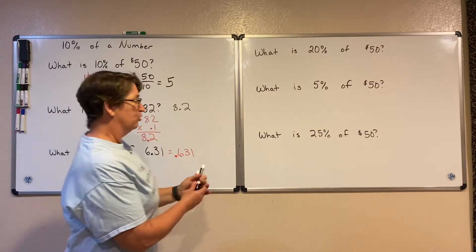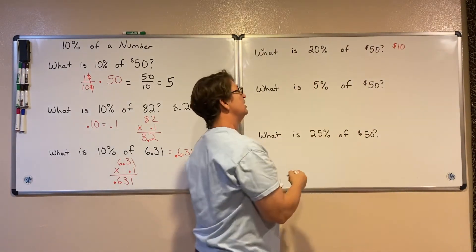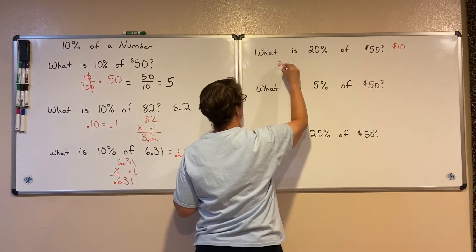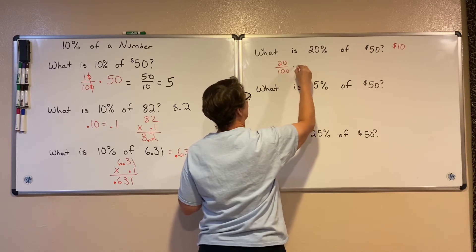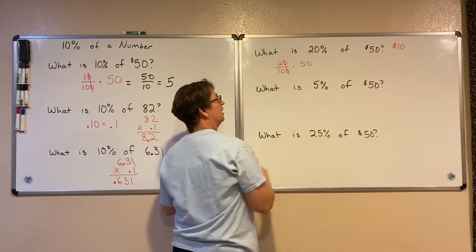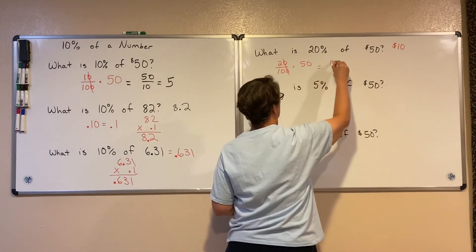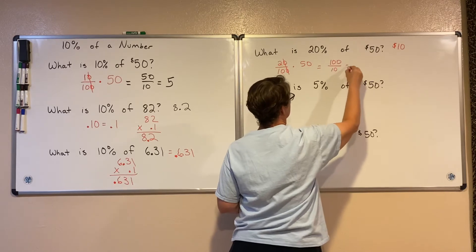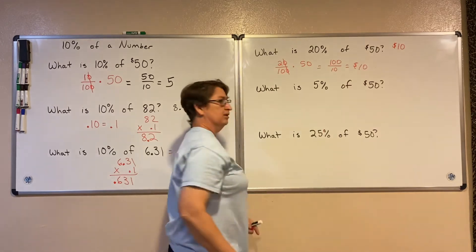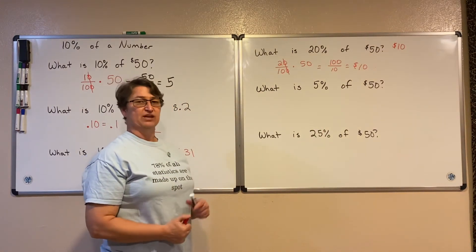So five doubled is just going to be $10. So I'll show you using the same multiplication. Well, 20% is just 20 over 100 times that 50. We do the same thing where the zeros, we can simplify that fraction to 2/5 so that we end up with 100 over 10, which is equal to $10. So all we did was take our $5 and double it. So to find 20% of a number, you just take your 10% and double it.